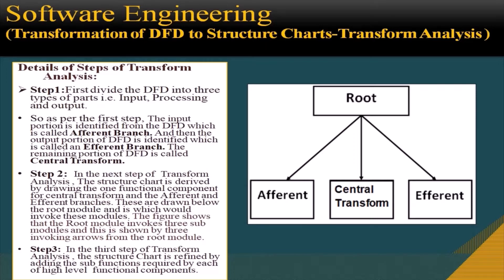These components are drawn below the root module, which invokes them. The root module is represented as a rectangular box, and there are three sub-modules — also represented as rectangular boxes — that is: afferent, central transform, and efferent module. In step 3 of transform analysis, the structure chart is refined by adding the sub-functions required by each of the high-level functional components.